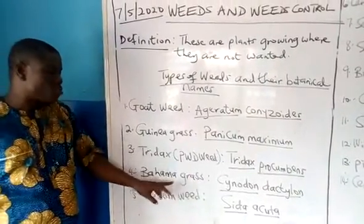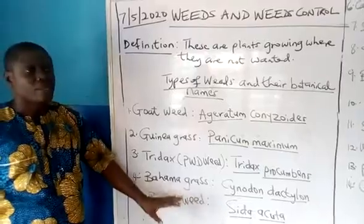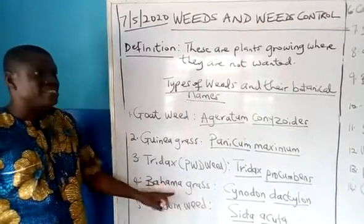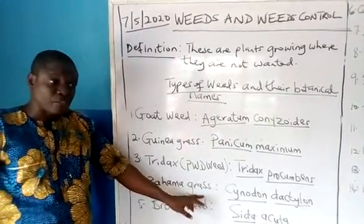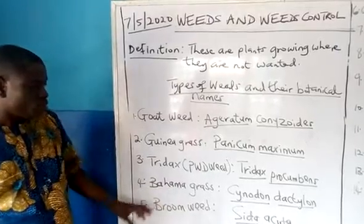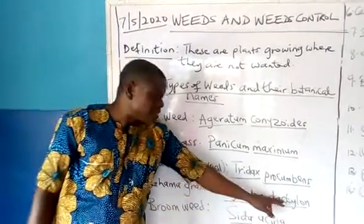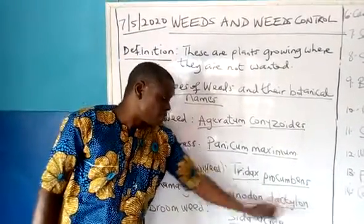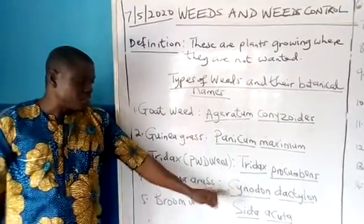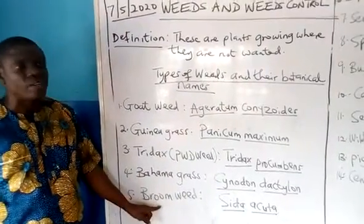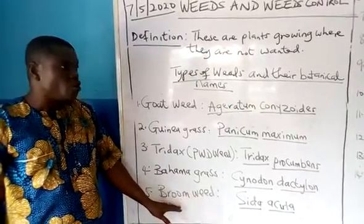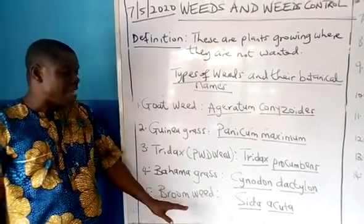This grass — Bahama grass — is mostly confused with carpet grass, but they are two different types of grasses. Bahama grass is separate from carpet grass, so don't confuse them. Its botanical name is Cynodon dactylon. Broomweed is called Sida acuta. It is a very tough kind of weed that can survive in very difficult and dry terrain.